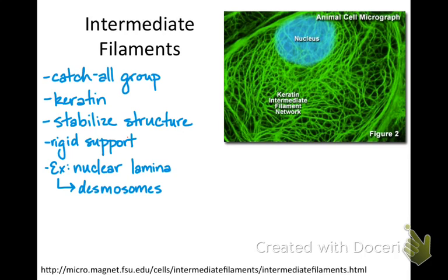We're going to talk about ways cells are held together. When I discuss desmosomes, which are a lot like rivets holding cells together, you can think of intermediate filaments — because they actually create and compose the desmosomes, that rivet-like structure linking cells together.